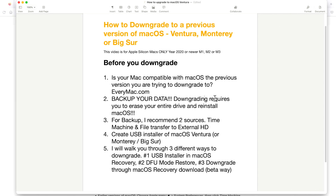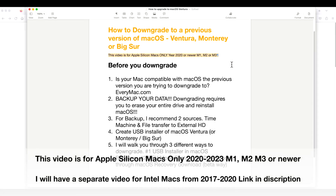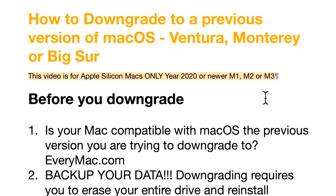I always put detailed chapters in the description so you can jump to the exact point you need. I recommend hanging out here for just a minute or two because I go over some really important information that could save you a lot of time. This video is for Apple Silicon Macs only from 2020 or newer — M1, M2, or M3. Intel T2 Macs are a different process covered in a separate video, with a link in the description.